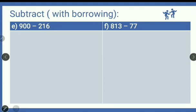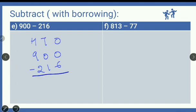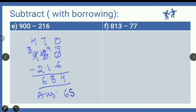Next question: arrange 900 minus 216 in column. In the ones place, not possible to subtract 6 from 0, so it goes to the tens place to borrow. But the tens place also has 0, so it goes to the hundreds place: 9 reduces to 8 and the tens place gets 10. Then this 10 reduces to 9 and the ones place becomes 10 — this is double borrowing. From 10 subtract 6, you get 4. From 9 subtract 1, you get 8. From 8 subtract 2, you get 6. So our answer is 684.